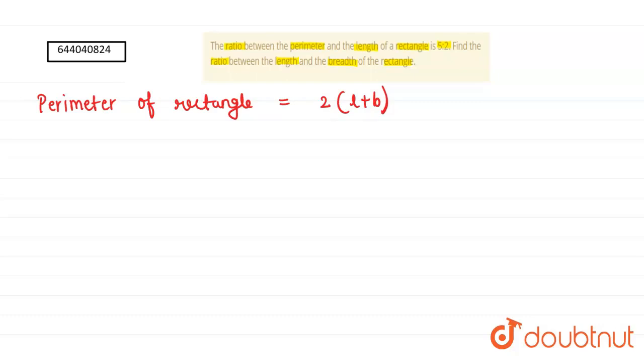Now we move to the condition that is given in the question - that is, the ratio between the perimeter and the length of the rectangle is 5:2. So the perimeter ratio length is 5:2.